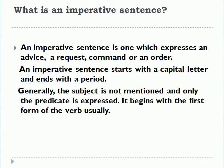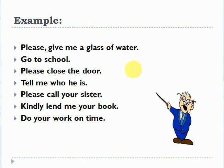An imperative sentence is one which expresses advice, a request, a command, or an order. It starts with a capital letter and ends with a full stop. Generally the subject is not mentioned — only the predicate is expressed — and it begins with the first form of the verb. Examples: 'Please give me a glass of water' (request), 'Go to school' (command), 'Please close the door' (request), 'Do your work on time' (advice).